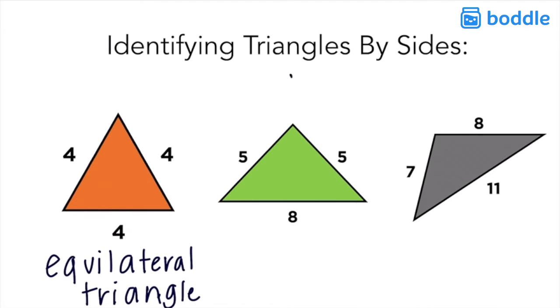Now we move over to the middle green triangle and we notice that that triangle has two equal sides of five and one long side of eight. That's called an isosceles triangle which is any triangle that has two equal sides.